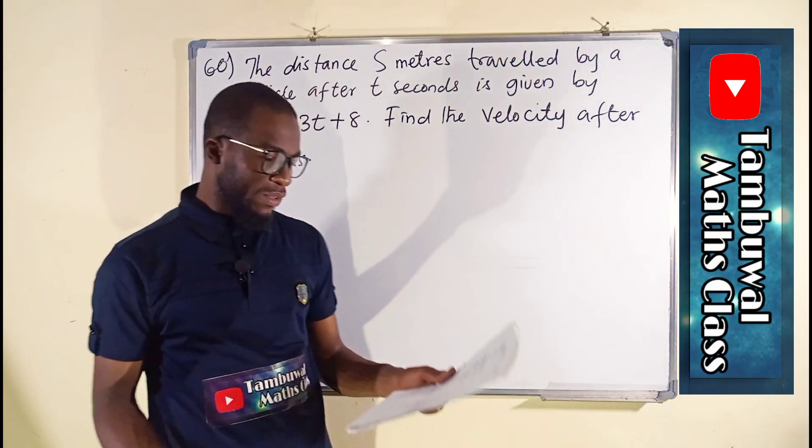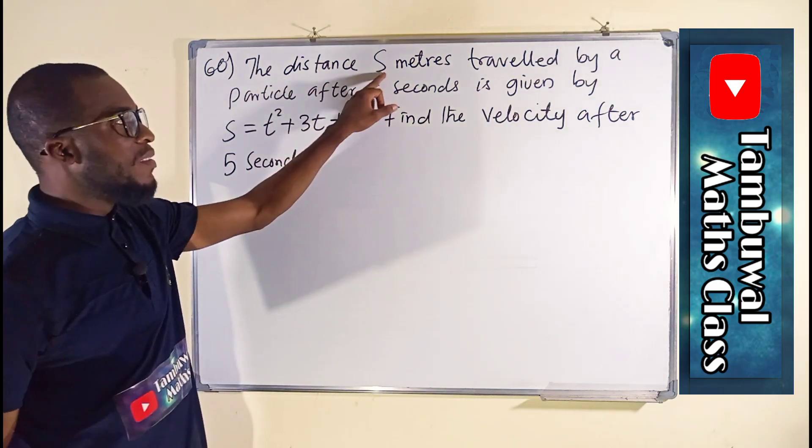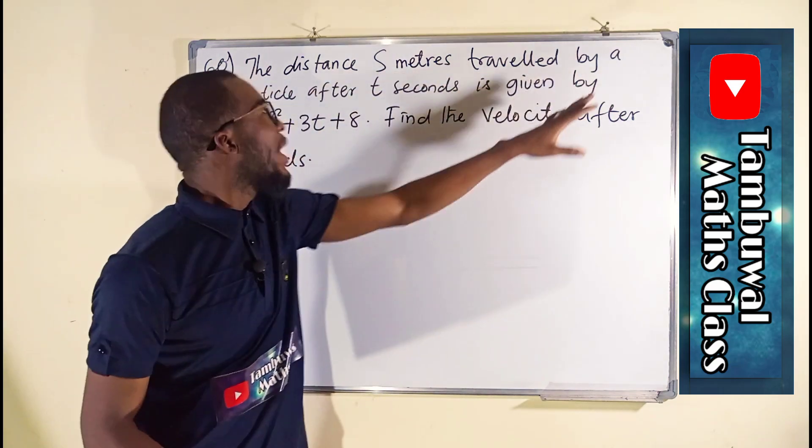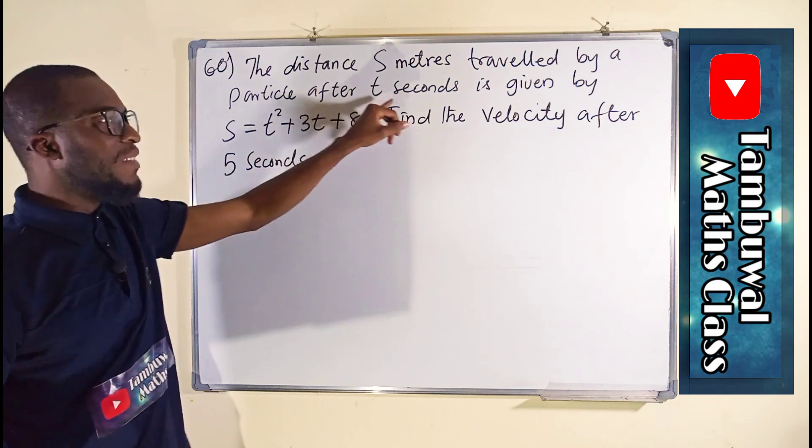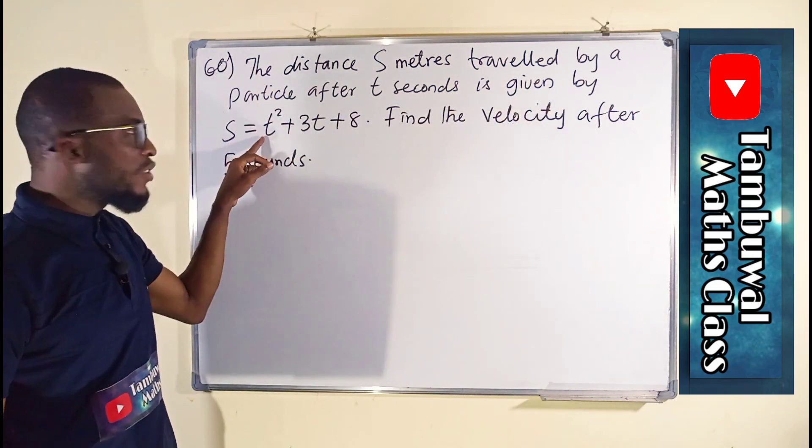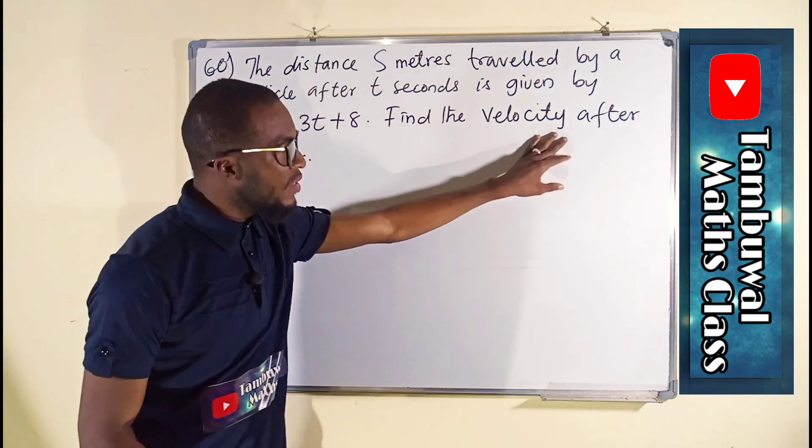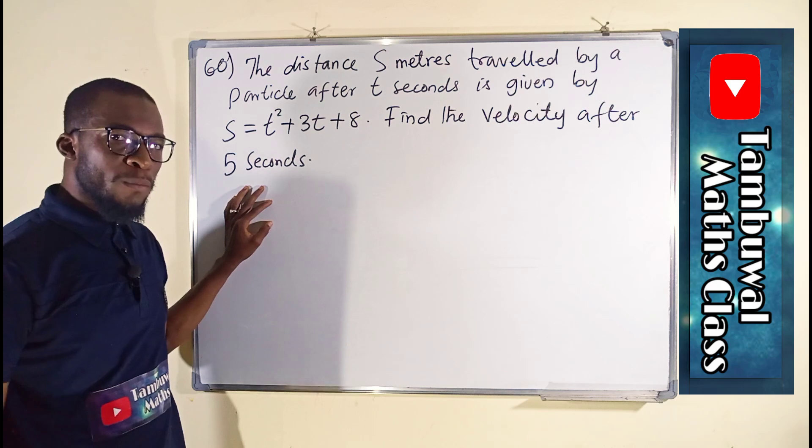So here is our last question, question number 60. It says the distance s meters traveled by a particle after t seconds is given by s equal to t squared plus 3t plus 8. We're asked to find the velocity after 5 seconds.